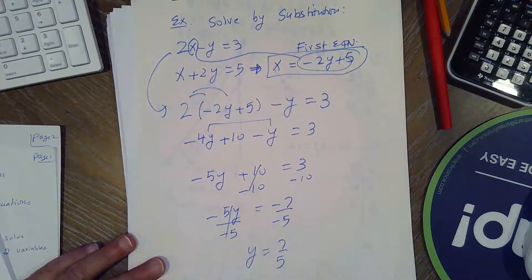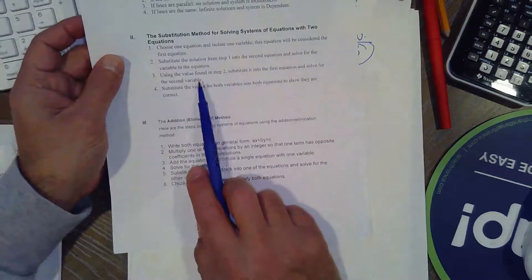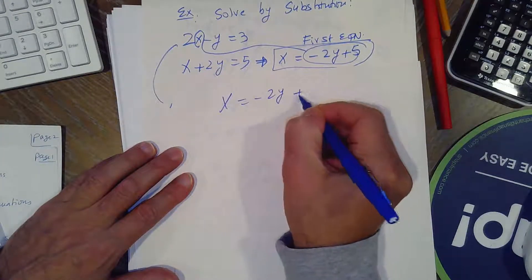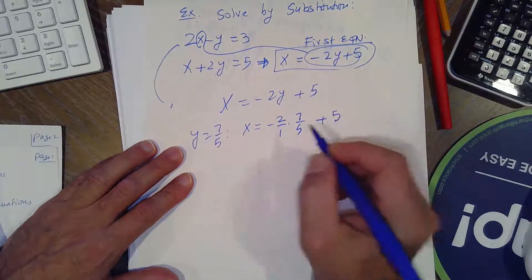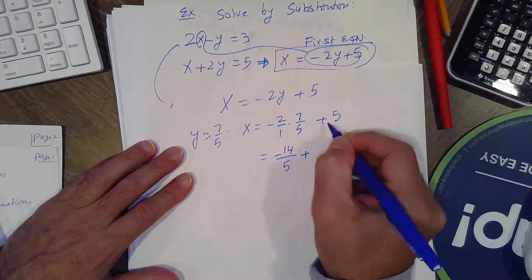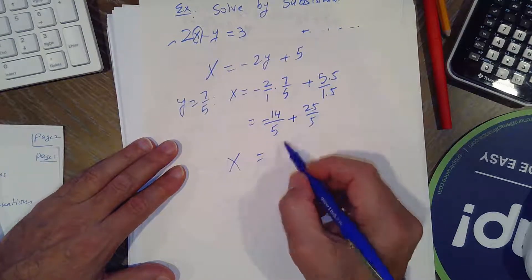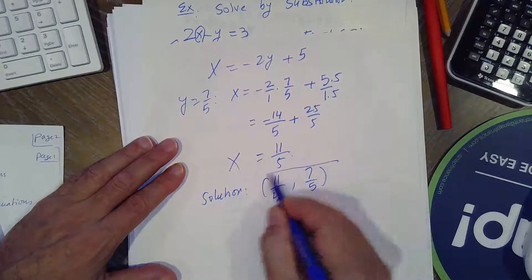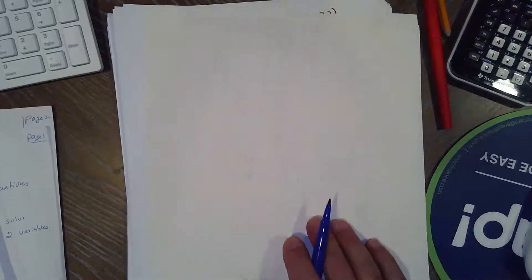Don't stop here — this is only 50% of the answer. Go back to the first equation x equals negative 2y plus 5 and substitute y equals 7 over 5: x equals negative 2 times 7 over 5 plus 5, which is negative 14 over 5 plus 25 over 5, giving x equals 11 over 5. So the solution is x equals 11 over 5 and y equals 7 over 5. You're welcome to check it back into both equations.